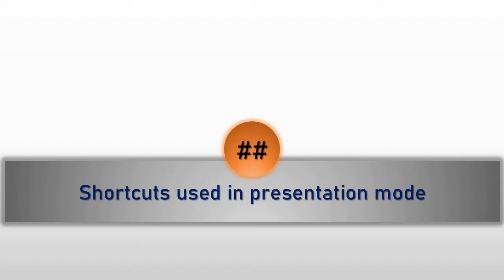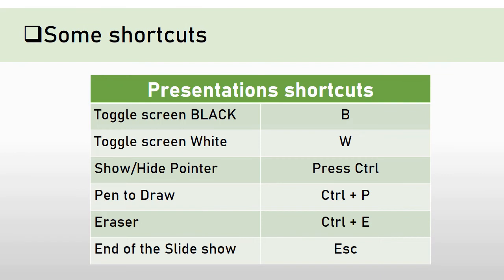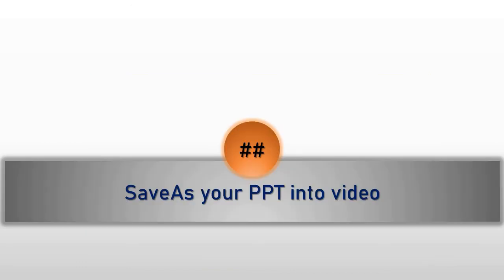Here are some shortcuts helpful during the presentation: press B to toggle the screen black; press W to toggle the screen white; press Ctrl and the mouse button to show or hide the pointer; press Ctrl+P to draw on slides in presentation mode; press Ctrl+E for the eraser; and press Escape to end the slideshow.